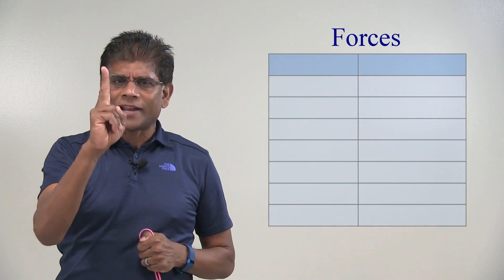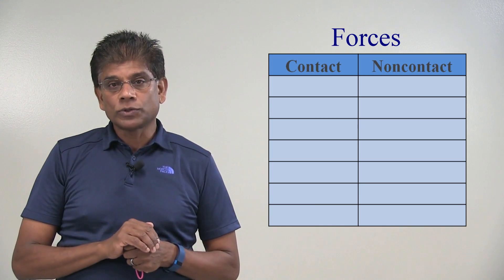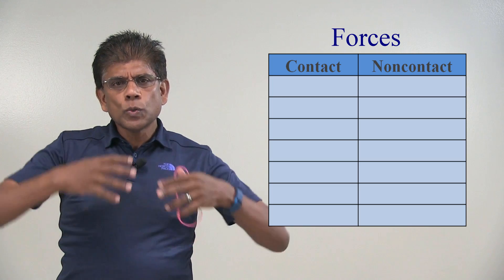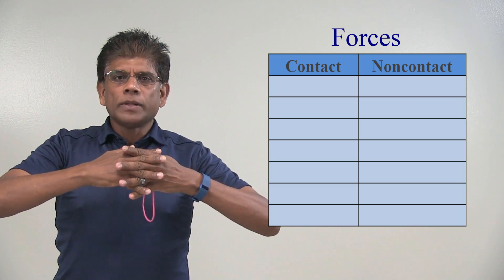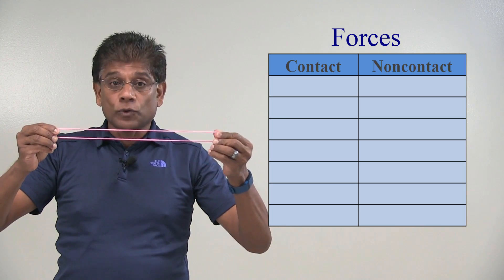For simplicity, we can classify forces into two categories, contact forces and non-contact forces. As the name implies, contact forces occur when two bodies are in physical contact. For example, the force that I am applying on this rubber band is a tensile force.